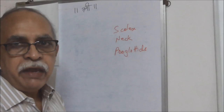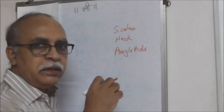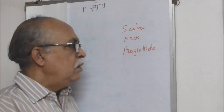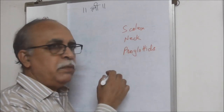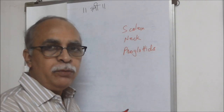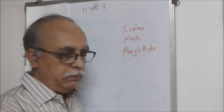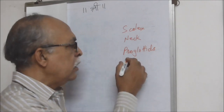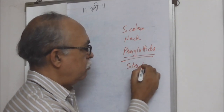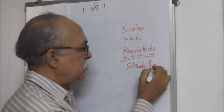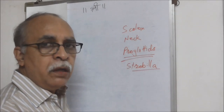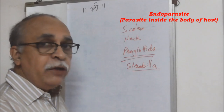The body is divisible into three main parts: scolex (the head region), neck (the middle part), and proglottids, which are false segments. They are called false segments because there is no system common to all segments — every segment is almost an independent part of the body. Together all the proglottids form what we call the strobila.